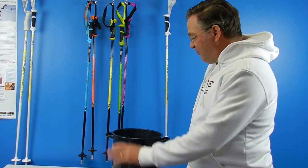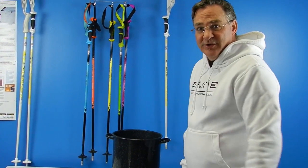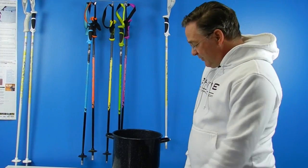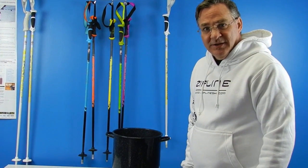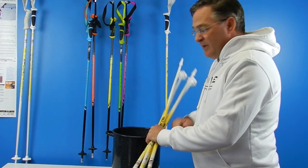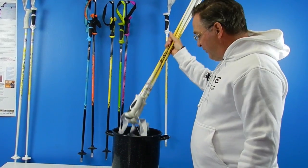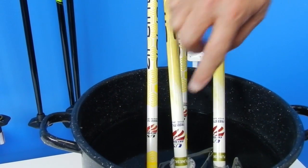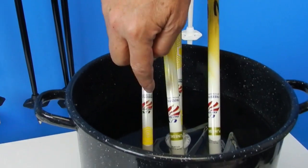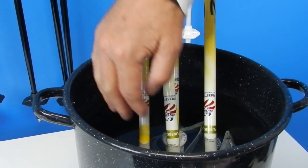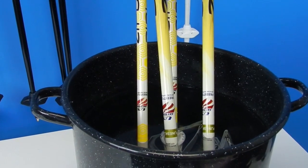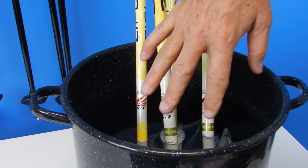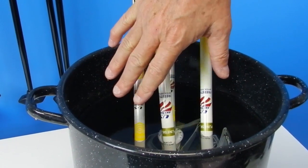First what you want to do is get a pot of boiling water. You can do it on your kitchen stove or if you're at the office we use a simple hot plate. You want to take your poles and simply put them in the water. Once you put them in the water be sure the water level is above where the grips end so the water and the heat can get down in between the shaft of the pole and the grip.